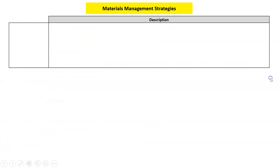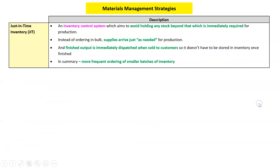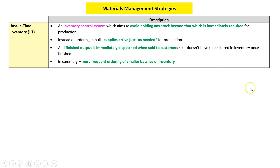The one that is the most useful, one of the best topics of the year, is just-in-time inventory. We aim to avoid holding any stock beyond that which is immediately required. Instead of ordering in bulk, we get supplies arriving just as needed, and as soon as we finish something we send it to the customer — we don't have to hold on to it. To summarize: order things more frequently in smaller batches of inventory.